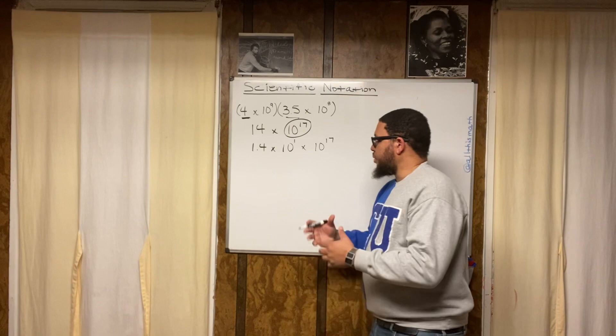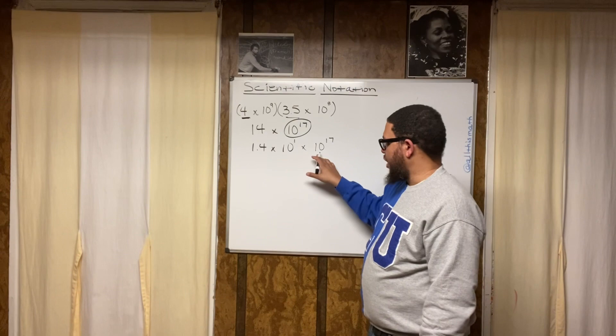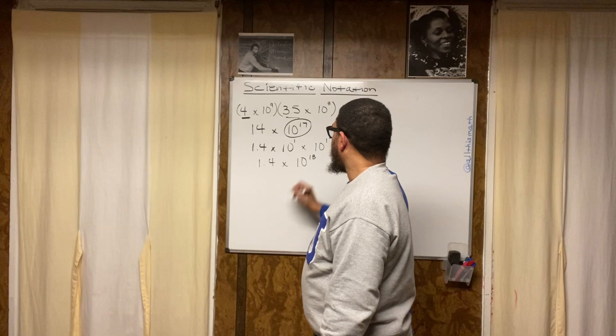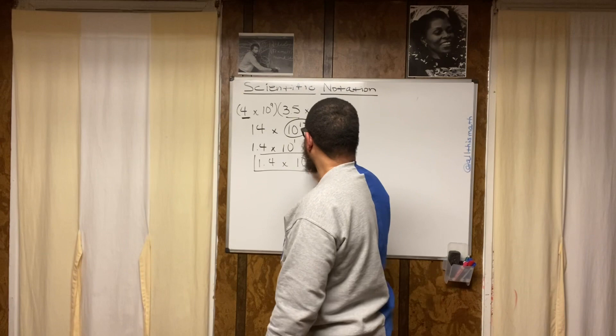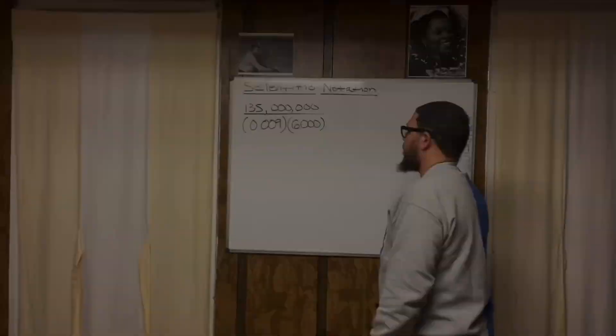Now to put this in proper scientific notation, we use the multiplication rule of exponents again and add the exponents: 1 plus 17 gives us 18. So our final answer is 1.4 times 10 to the 18th power.